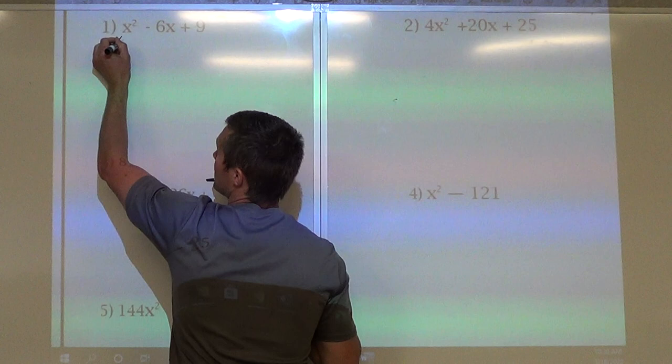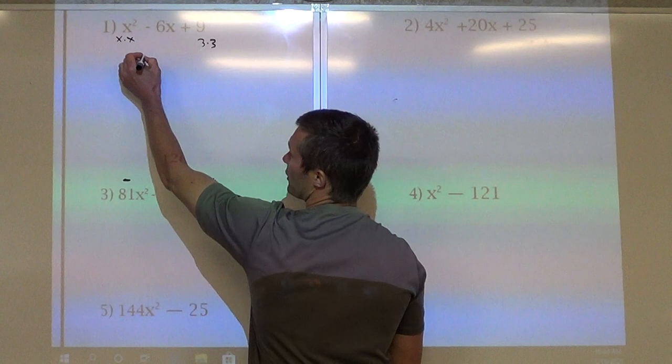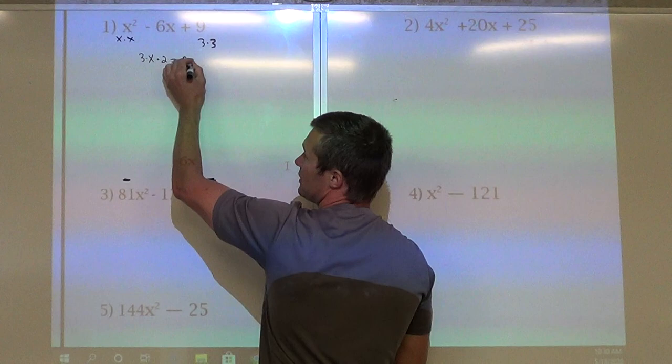This 9 is 3 times 3. So I multiply: 3 times x is 3x, and then times it by 2. So 3 times x times 2, 3 times 2 is 6. 6x, is that the middle term? Yep.